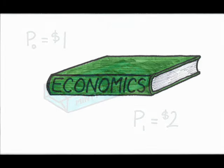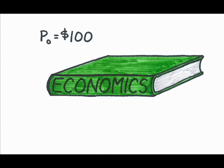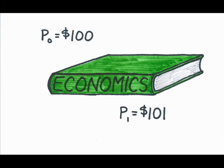What if we're talking about a textbook rather than a pack of gum? Originally the price was $100, now it's $101. This is still an absolute change of $1, but in this case it's a small change — price has increased by only 1%. The bottom line is that we need to know not only the dollar amount of the price change, but also how this compares to where we started.